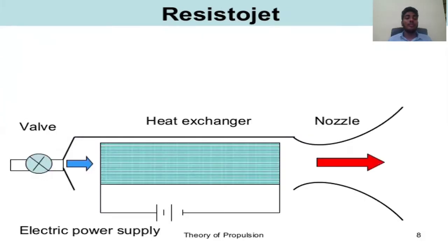See the diagram: this is the valve, this is the heat exchanger, this is the nozzle, and this is the electric power supply.